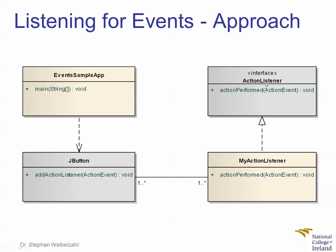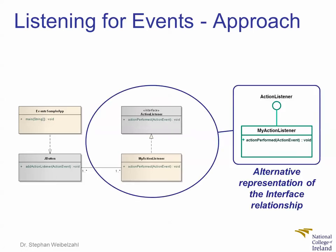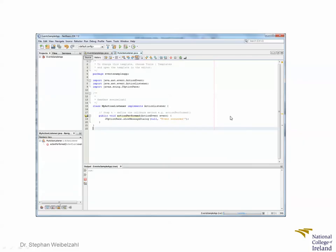The interface ActionListener prescribes that you need to have a method called ActionPerformed. Here is a slightly different way of representing the same thing. Instead of two separate classes, the MyActionListener class that implements the ActionListener interface can be described with a shorthand for implements ActionListener. Now let's look at how this would actually look at the code level — here we go.